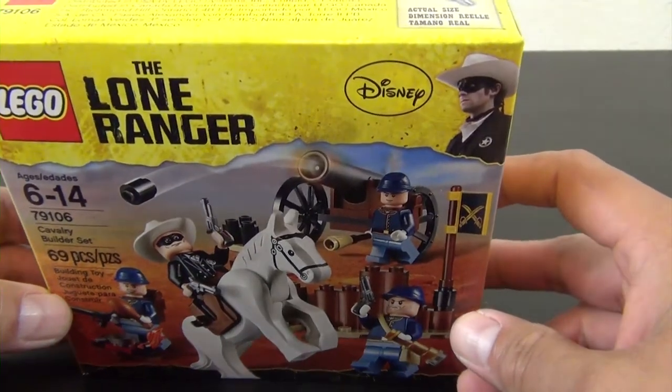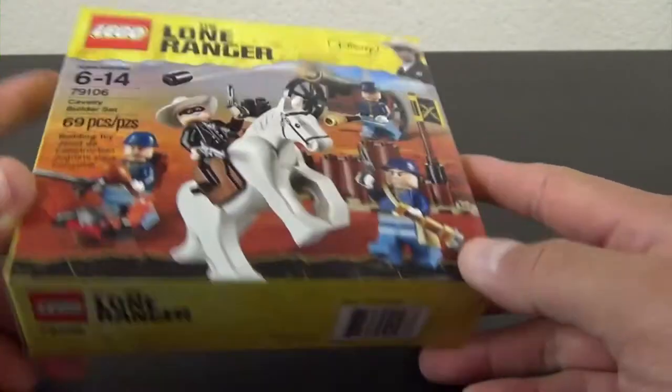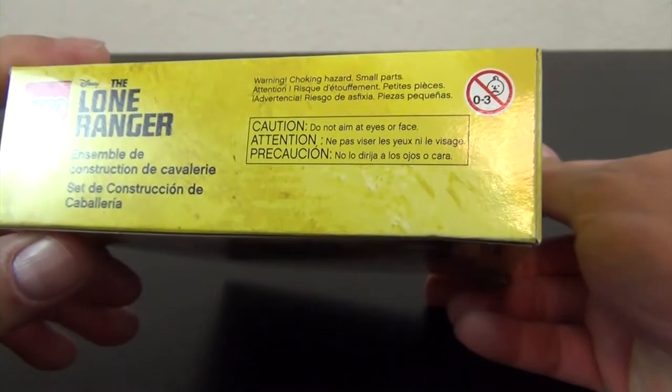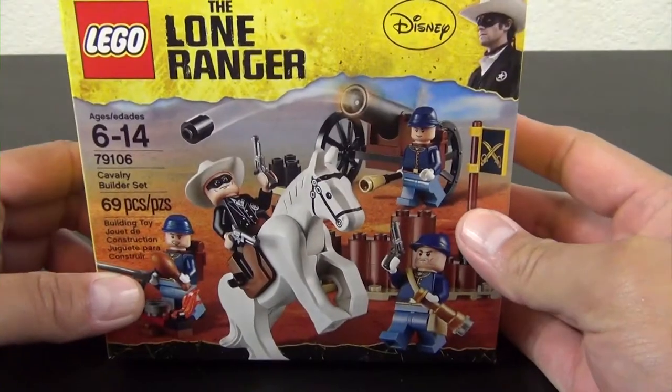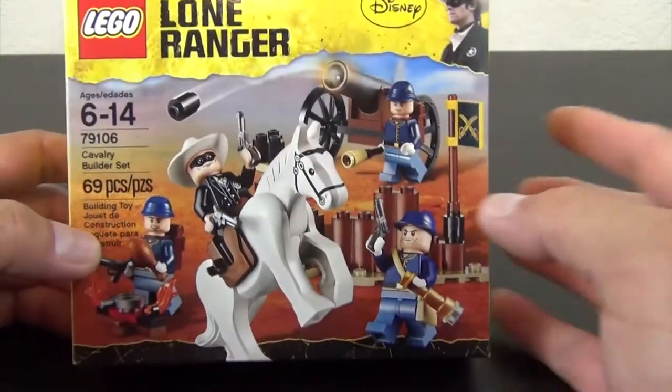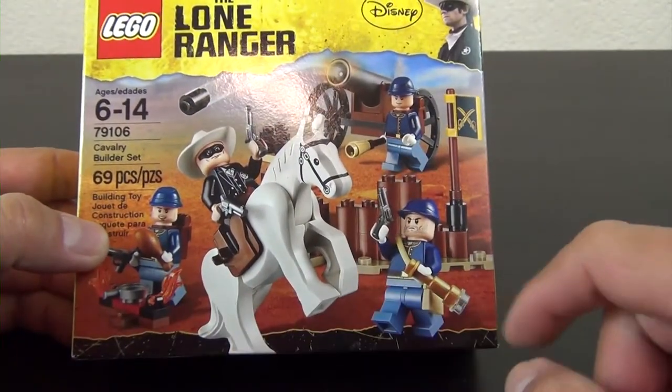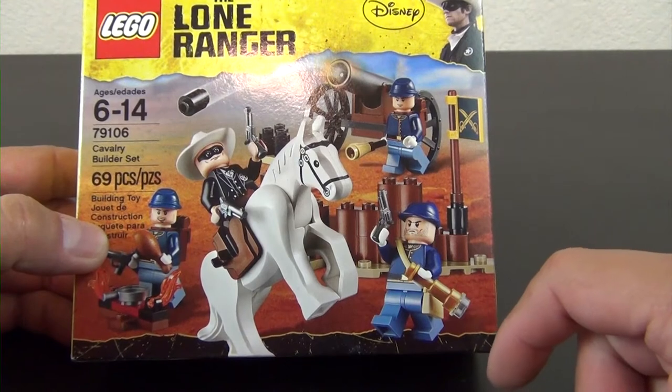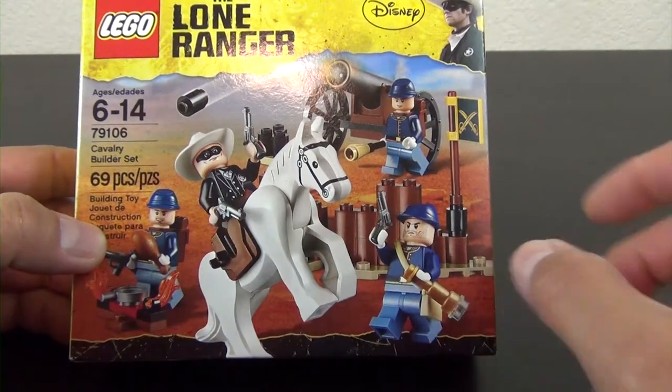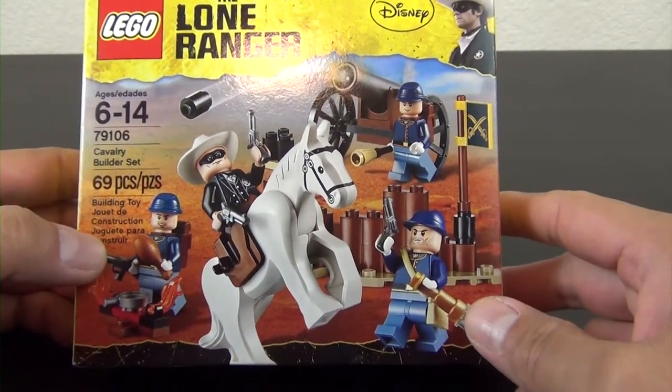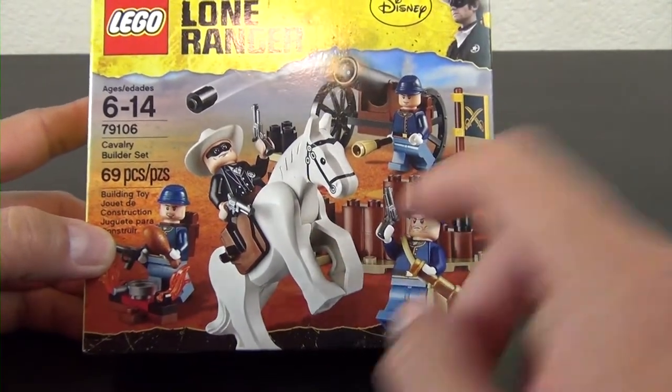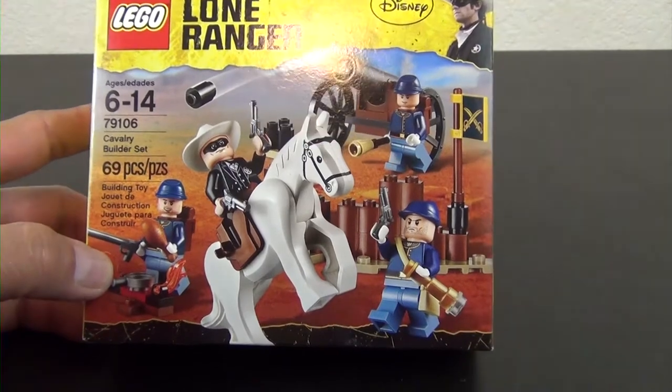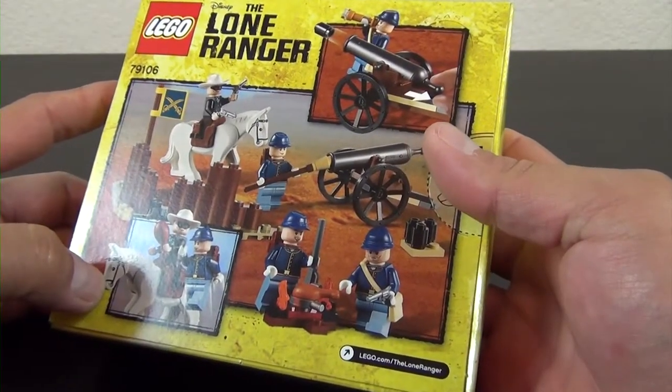This is rather old. Let me see when the date of this is. 2013, so about four years old. You can see you have three of the cavalry soldiers and then you also have the Lone Ranger, but it kind of defeats the purpose of building a cavalry if you're going to have a bunch of Lone Rangers.